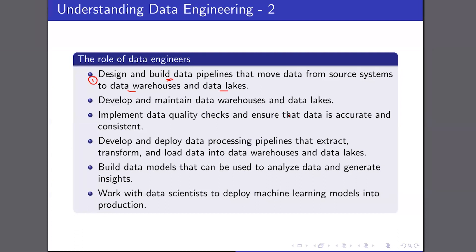A data lake is a place where you store your raw data before processing — a centralized place to collect it. A data warehouse, on the other hand, is where you put all your processed data that is ready for analysis or for training machine learning models. This is the underlying difference between a data lake and a data warehouse.